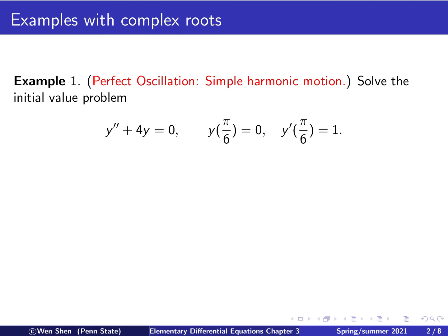The first example will result in something called perfect oscillation, and you will see the reason very soon through the solution. We want to solve the following initial value problem: y double prime plus 4y equals 0, with initial values y(π/6) = 0 and y'(π/6) = 1.